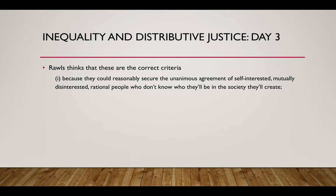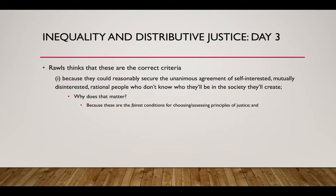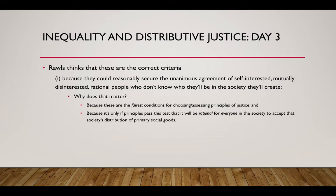Rawls thinks these are the correct criteria first because they could reasonably secure the unanimous agreement of self-interested, mutually disinterested, rational people who don't know who they'll be in the society they'll create. Those seem to be the fairest conditions for choosing or assessing principles of justice. It's only if principles pass that test that it will be rational for everyone in the society to accept that society's distribution of primary social goods, and thus only then that the distribution is legitimate in an important way.